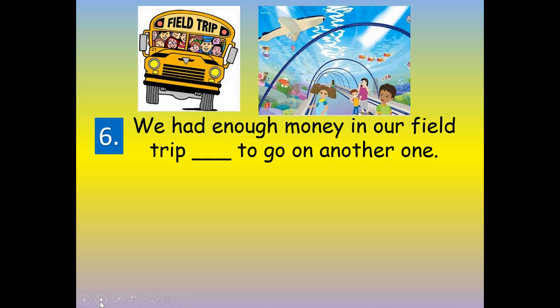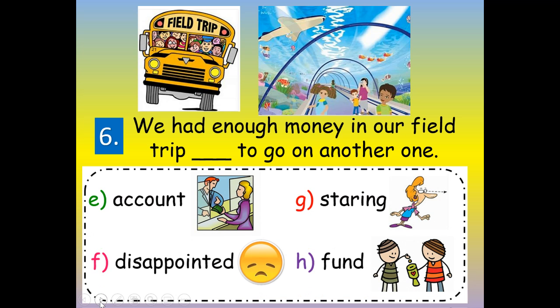Number six: we had enough money in our field trip blank to go on another one. Field trip account... disappointed... staring... or fund. Fund — we had enough money in our field trip fund to go on another one. F-U-N-D, fund.